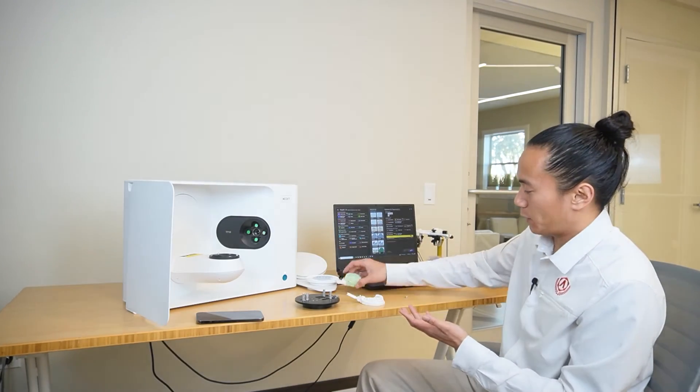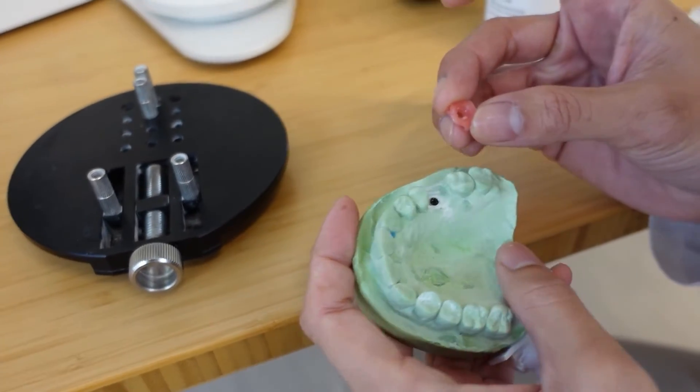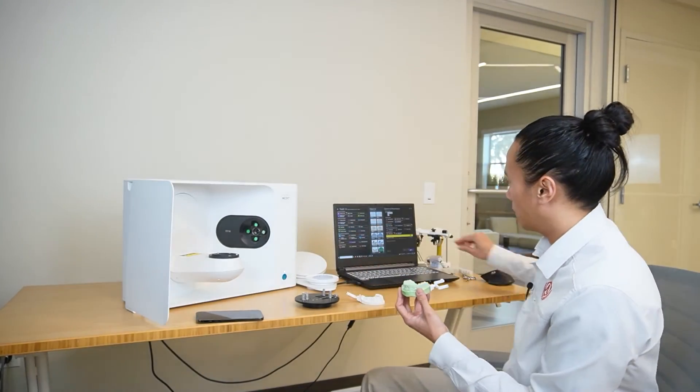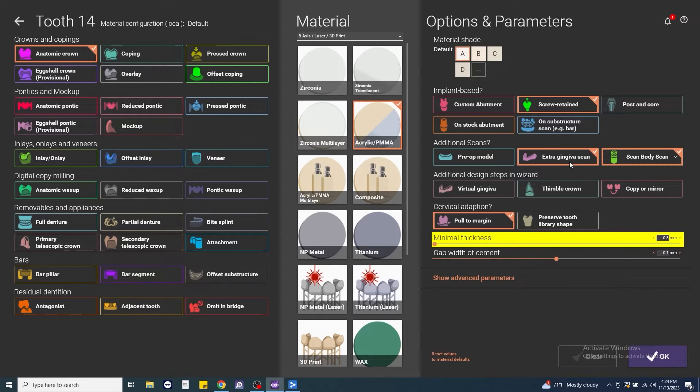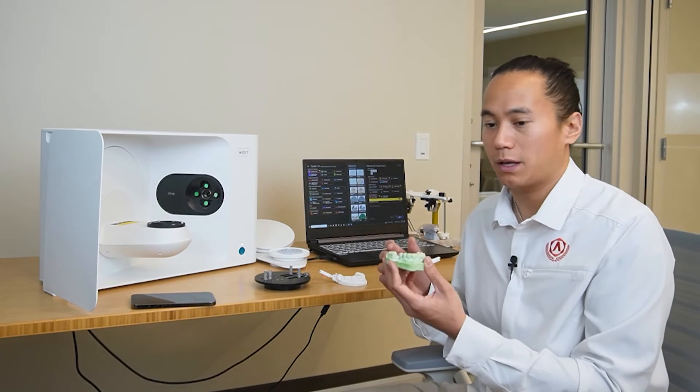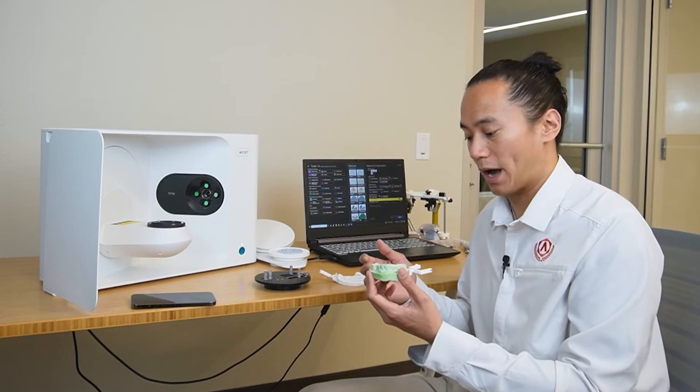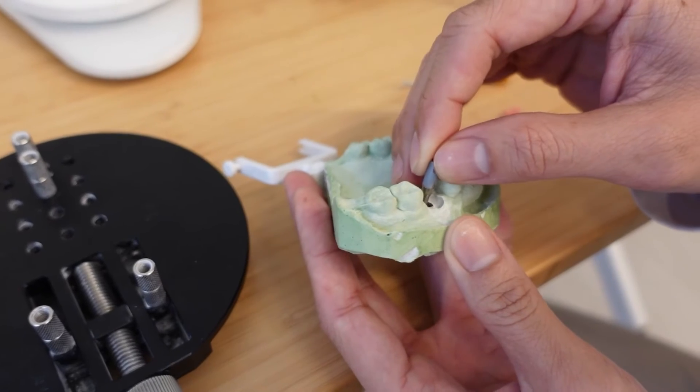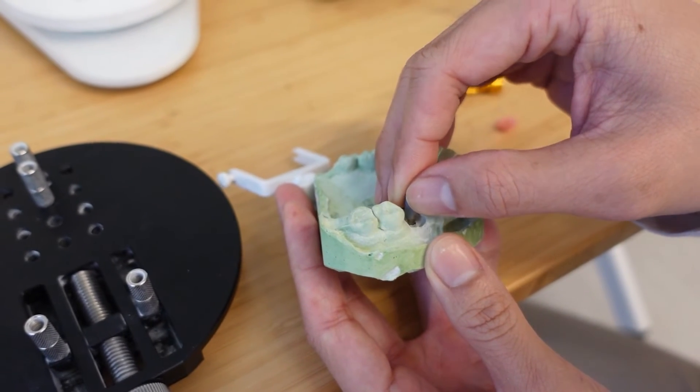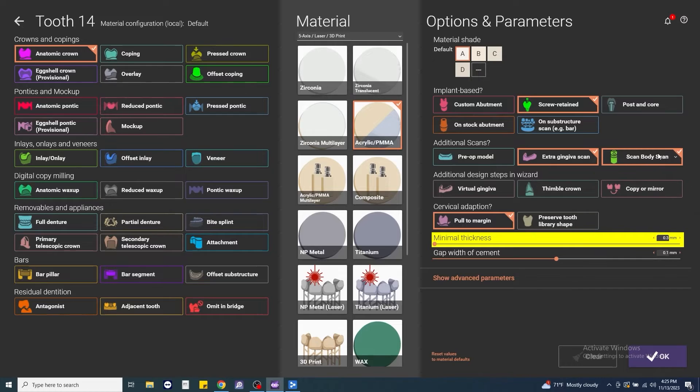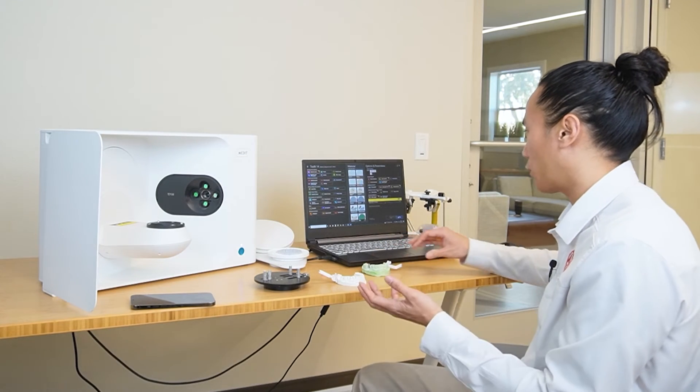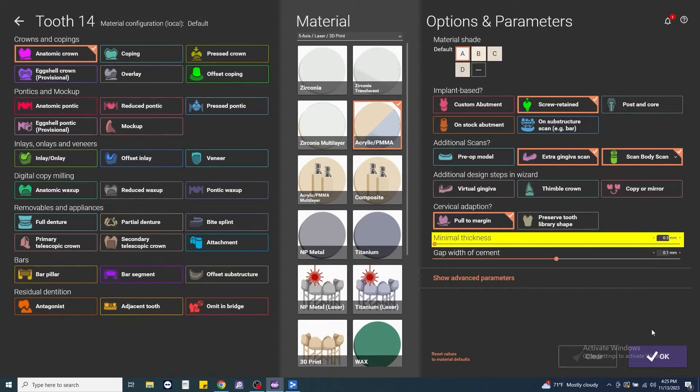Under additional scans, this is where it's going to be important. If we have a removable gingiva like this, we want to include that in the initial setup. So under additional scans, we're going to select extra gingiva scan. If we had a pre-op that the client has waxed up or that we've waxed up, we can include that here as a pre-op. Under scan body scan, we have a few different options. Because we're able to scan the model and the model with the scan body separately, we're going to make sure that we have the scan body scan option selected here. We're not doing a virtual gingiva or thimble crown. We're not going to copy mirror anything. So from there, we'll just click OK.